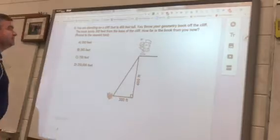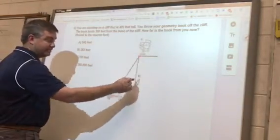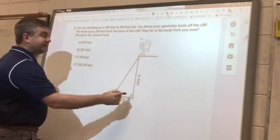All right, here is the explanation for question number five. It says you were standing on a cliff that is 400 feet tall. So here you are right here, you're standing on a cliff that's 400 feet tall.